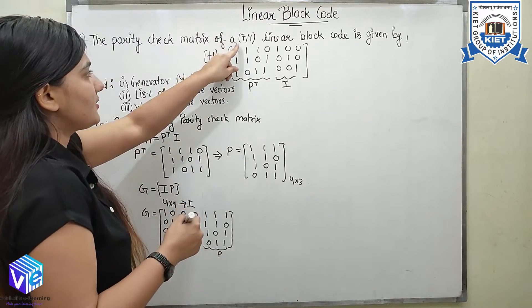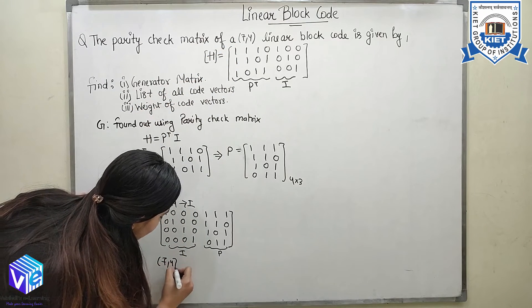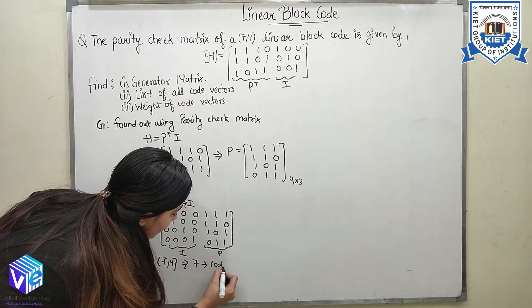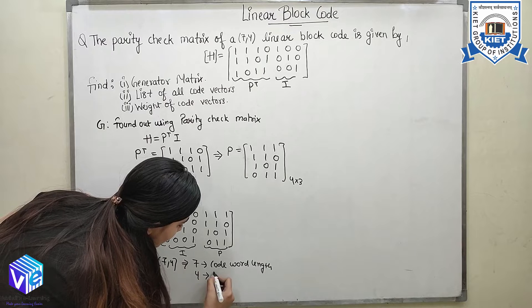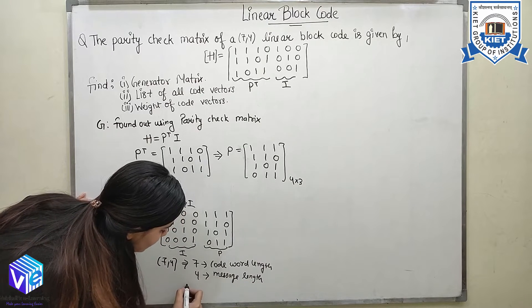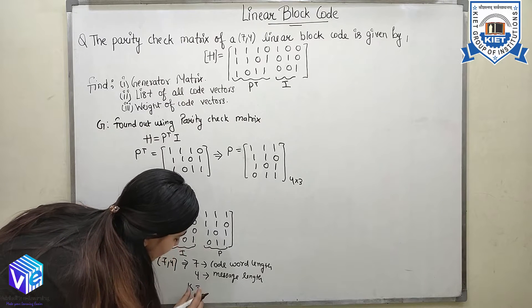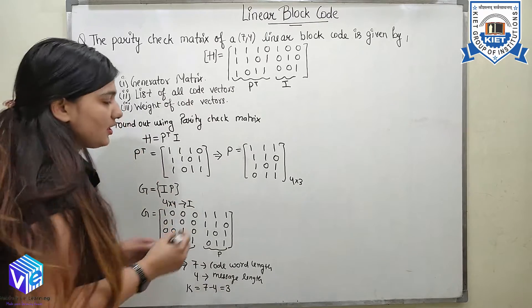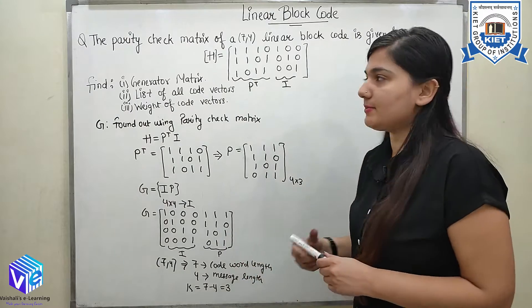This is the code of (7,4). Here 7 represents my codeword length and 4 represents my message length. I can easily find out that the parity bits length is equal to 7 minus 4, which equals 3. So for this code, I have 3 parity bits.